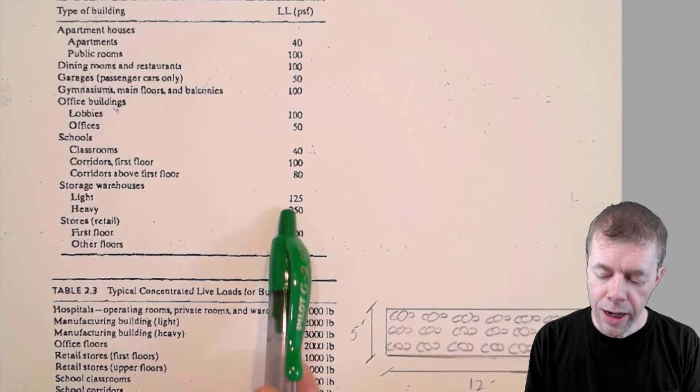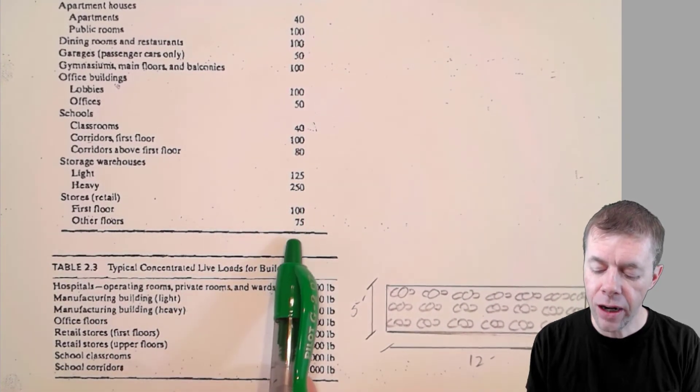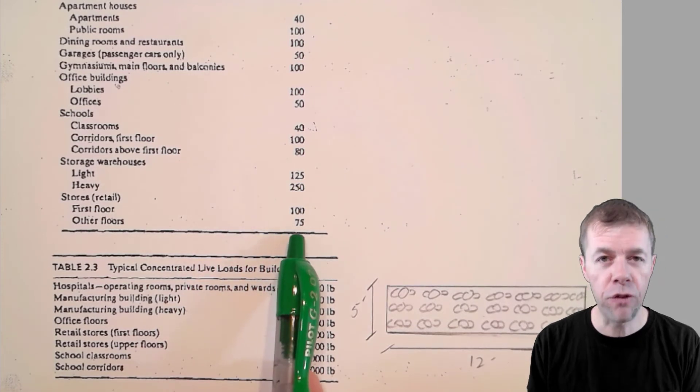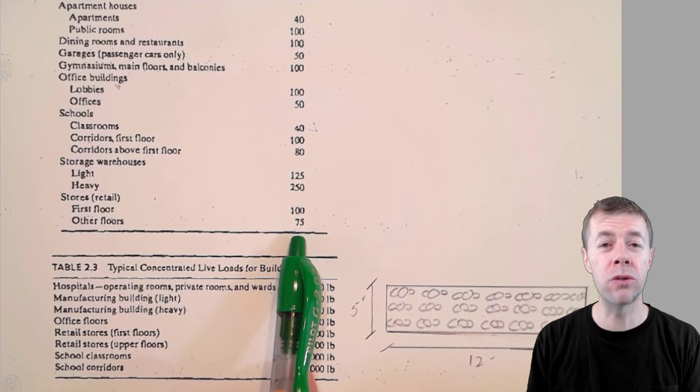Warehouses, whether they're light or whether they're heavy. Stores. The first floor is going to have higher live loads than the other floors. How come? Because people are more likely to be on those lower floors.